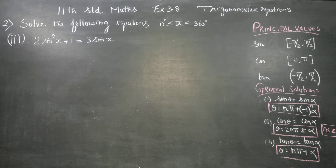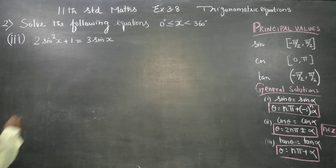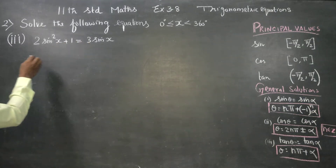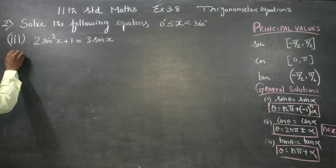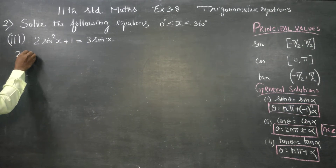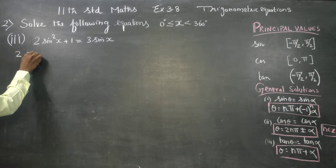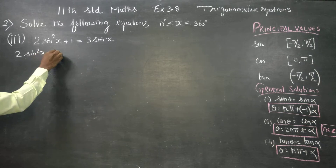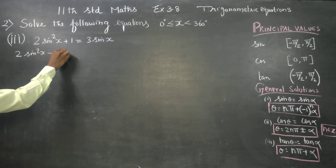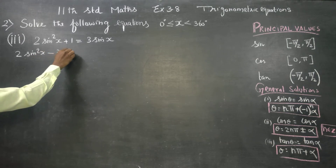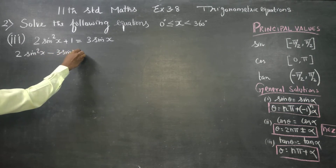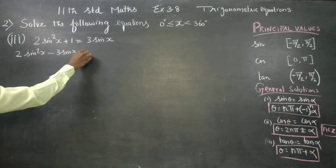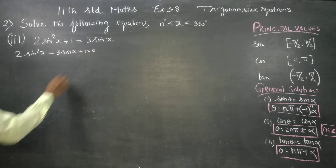Dear Levin Standard students, in exercise number 3.8, sum number 2, third sub-division, we have to solve this. I am going to start this sum: 2sin²x - 3sinx + 1 = 0.